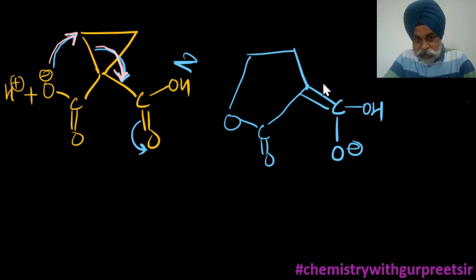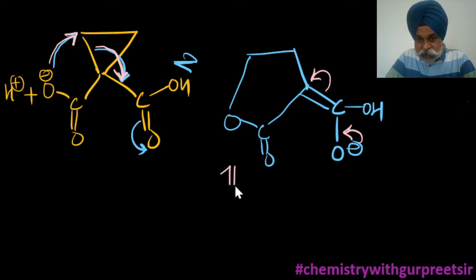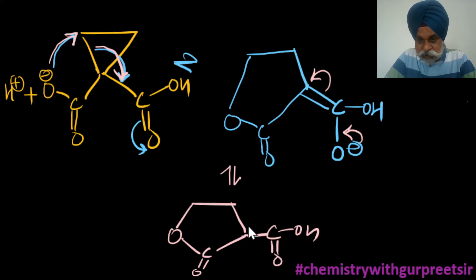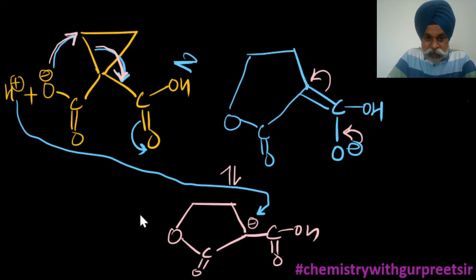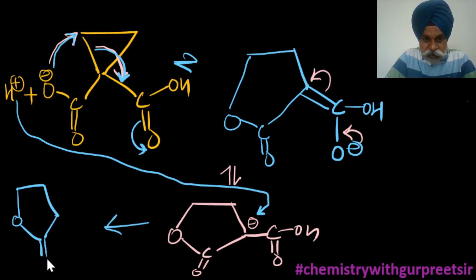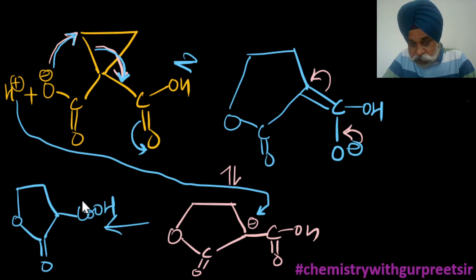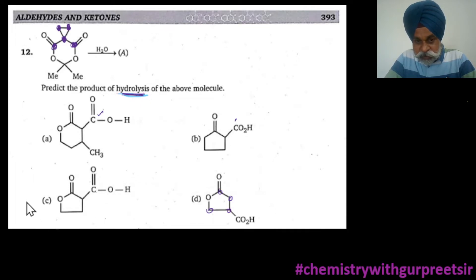Let me explain once more: this part attacks here, the ring opens, a double bond is generated, and the ring takes the shape of a five-membered ring. Then it goes back to recover the proton — you receive a C=O-H group here, this part becomes negative, and the H-positive goes to the other part. You end up with a five-membered ring along with a C=O-H group.